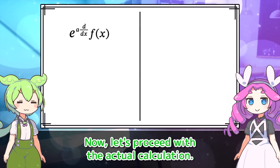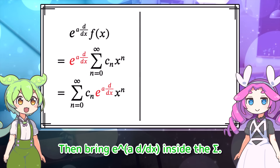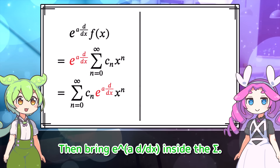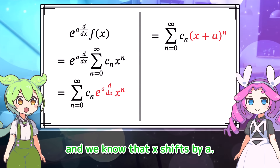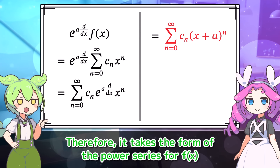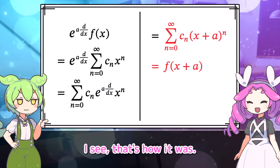Now let's proceed with the actual calculation. First, expand F of X into a power series, then bring E to the A·D by DX inside the sigma. This part takes the form we proved earlier, and we know that X shifts by A. Therefore, it takes the form of the power series for F of X with X replaced by X plus A.